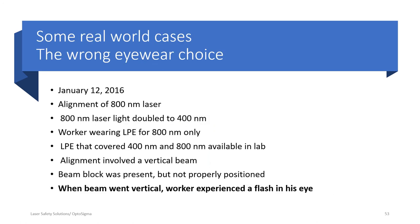In January 2016, people were working with an 800 nanometer beam and were about to align it. They had a nonlinear crystal producing frequency doubling from 800 to 400 nanometers, but the gentleman's eyewear was only rated for 800 nanometers. He got a reflection, and the 400 nanometer beam went right through his eyewear because it was not made to stop it. You have to know what wavelengths you are dealing with and what type of eyewear you need.